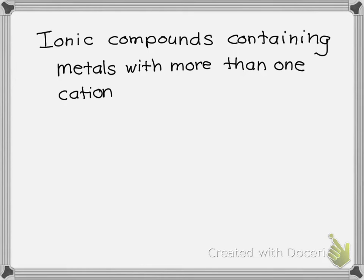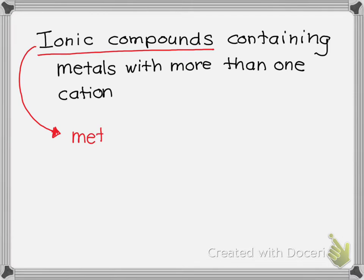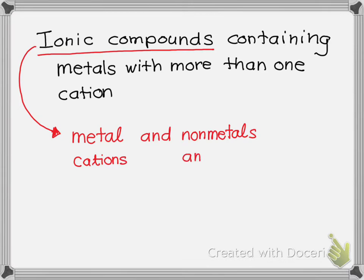This video goes over the rules on how to name an ionic compound that contains a metal with more than one cation. I want to start with the idea of how we'll know when we see a formula if something is an ionic compound, because the naming rules involve ionic compounds, covalent compounds, or acids. Ionic compounds are compounds that contain a metal and nonmetals — cations formed by metals and anions formed by nonmetals.